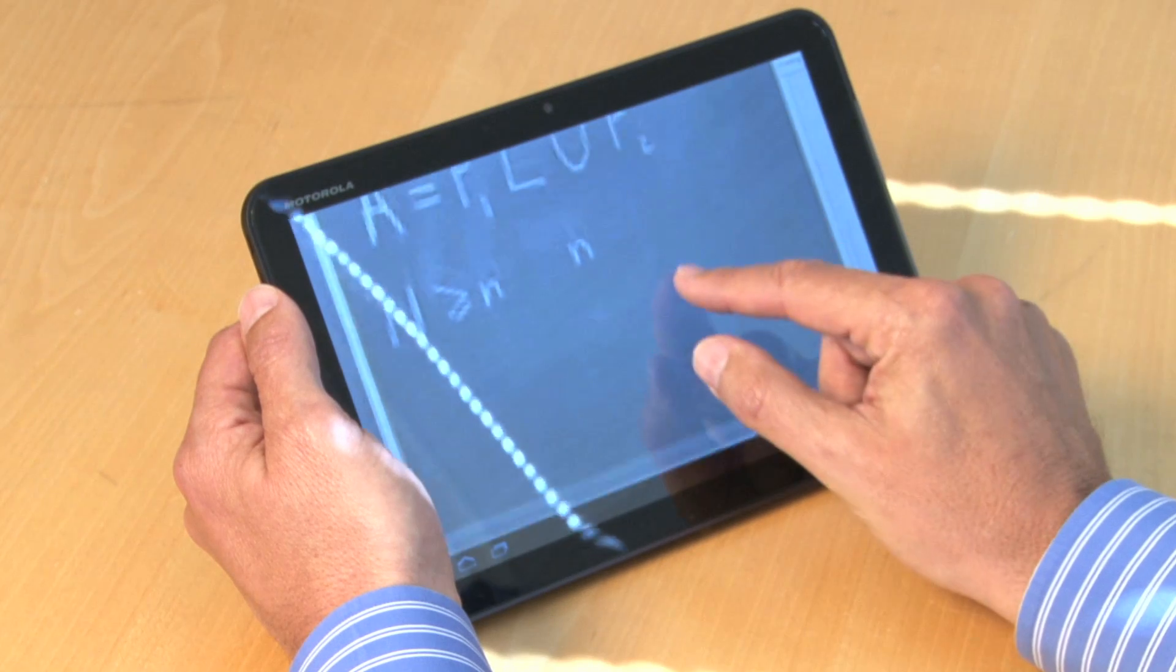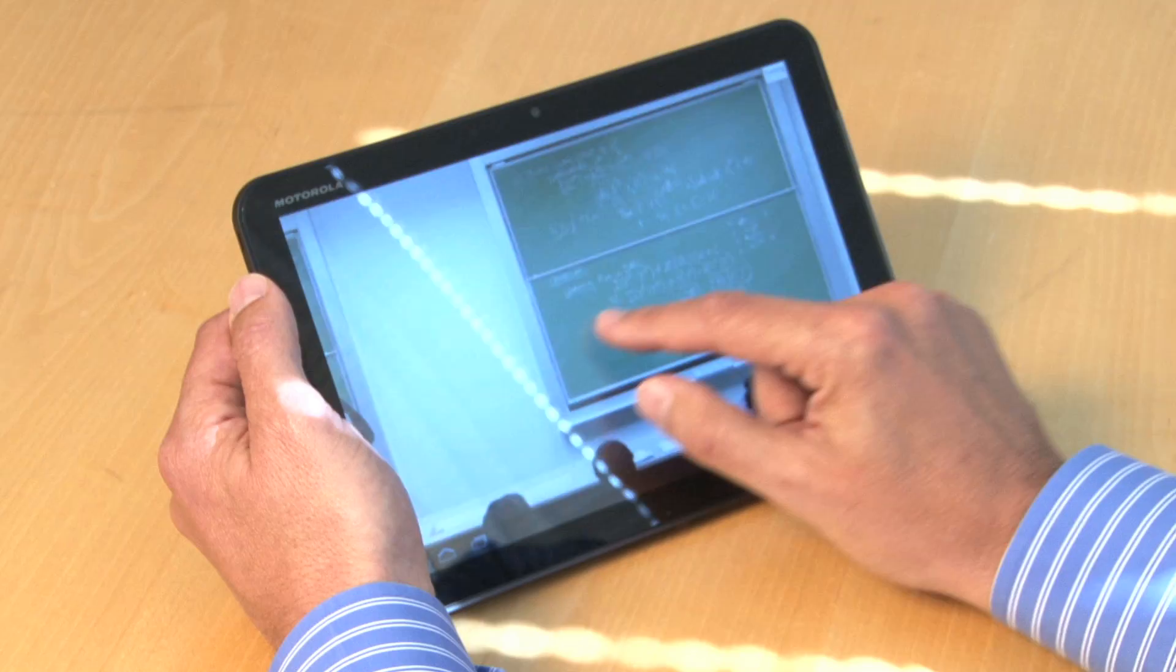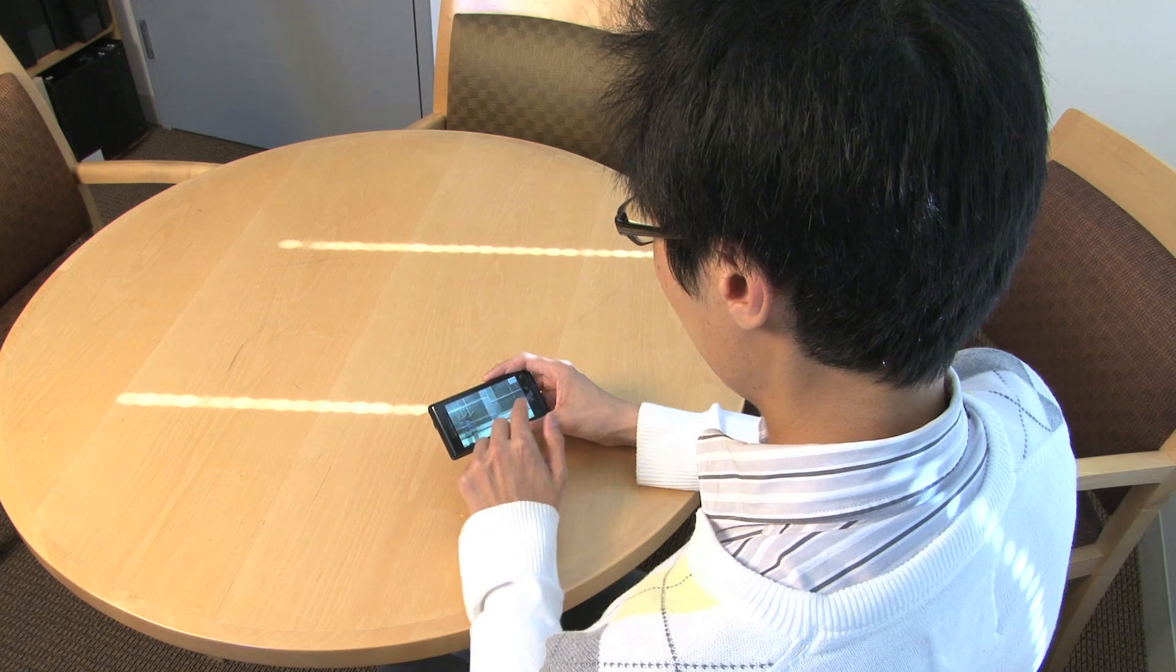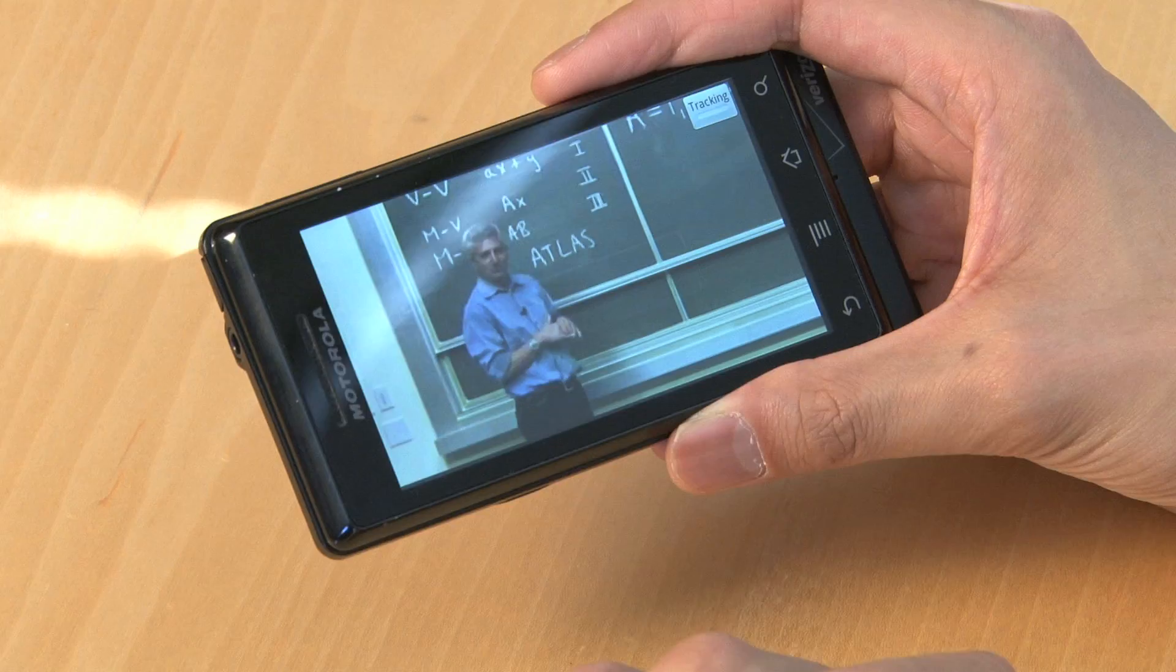If there's something on the blackboard and you want to have a closer look, you can in fact do that. It's very easy to just zoom into the video and scroll to the left and right and see the detail that you are interested in. There's just something very immediate and natural about this type of interaction on mobile devices.